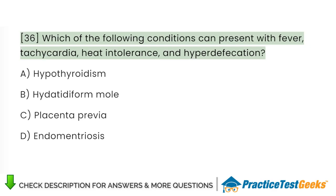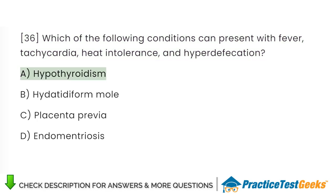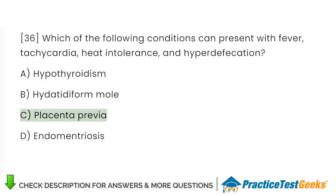Which of the following conditions can present with fever, tachycardia, heat intolerance, and hyperdynamic circulation? A. Hypothyroidism. B. Hydatidiform mole. C. Placenta previa. D. Endometriosis.